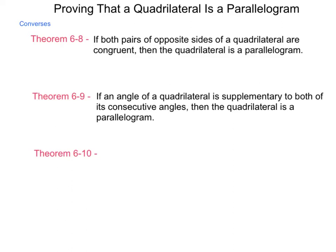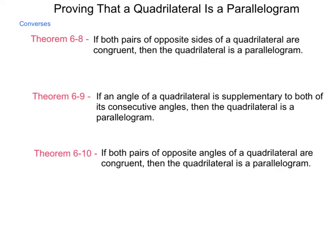And theorem 6-10 is the converse of theorem 6-5 from our previous lesson, and this one states if both pairs of opposite angles of a quadrilateral are congruent, then the quadrilateral is a parallelogram. And this one goes very well, actually, with theorem 6-9, because if a single angle is supplementary to both of its consecutive angles, then they would have to be congruent to each other.